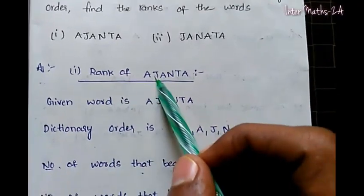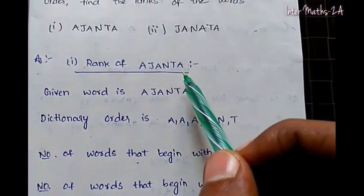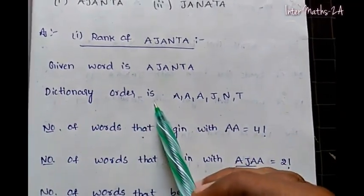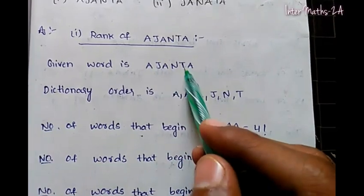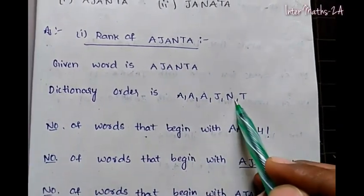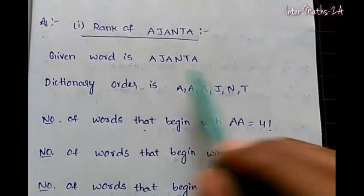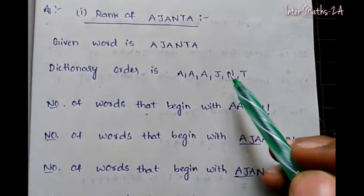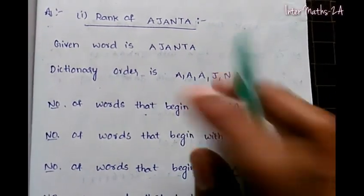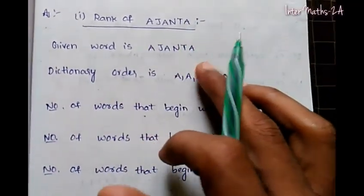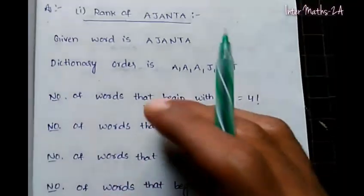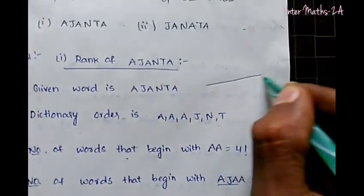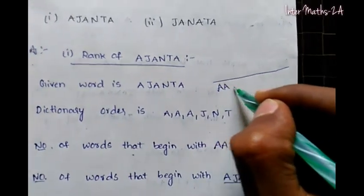We will see the rank of AJANTA - A-J-A-N-T-A. The given word is AJANTA. The dictionary order of its letters is A-A-J-N-T.